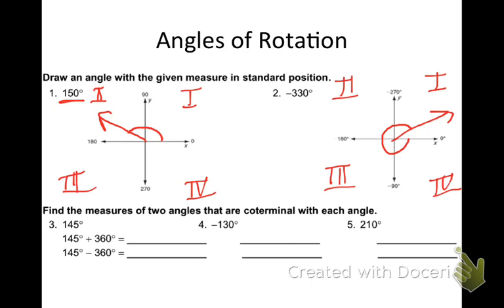Find the measure of two angles that are coterminal with each angle. To find coterminal angles, you either add 360 or subtract 360. For 145 degrees, adding 360 gives 505 degrees — that's the exact same angle because you go around a whole other time. Subtracting 360 gives negative 215 degrees. So 145, 505, and negative 215 would all look to be the exact same angle.